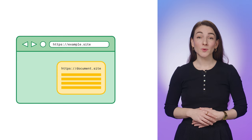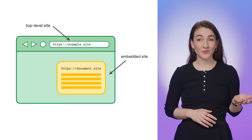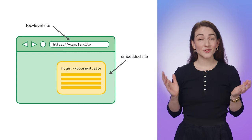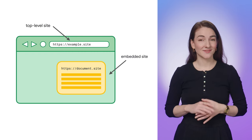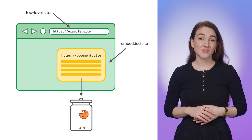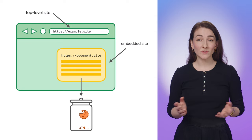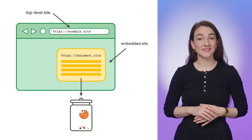Storage Access API provides a way for embedded cross-site content to check whether it currently has access to browser-based storage, such as cookies, and to request storage access if it doesn't. The API only enables embedded sites to access its own cookies — the same cookies it would have access to when users visited as a top-level site. In this video, I'll explain how it works, when you should use it, and what alternative solutions you should consider.